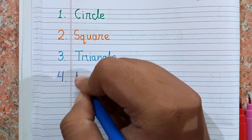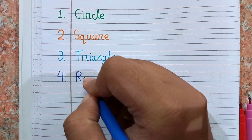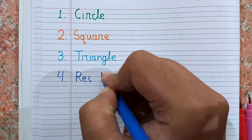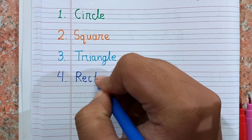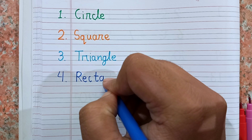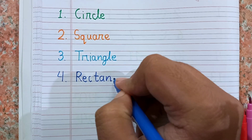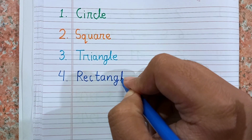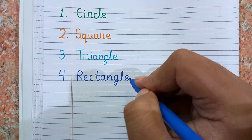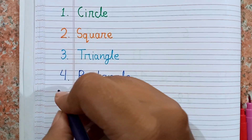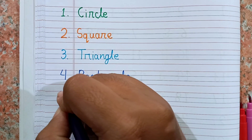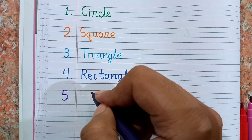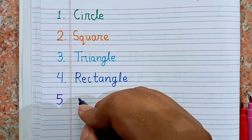The spelling of rectangle is R-E-C-T-A-N-G-L-E. Rectangle. This is rectangle.